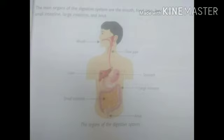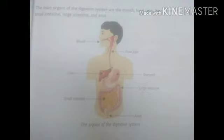We have studied that an organ system consists of different organs. Likewise, our digestive system also consists of different types of organs, and these organs are involved in the process of digestion. We can call the digestive system the digestive tract, and it starts from the mouth and ends at the anus.